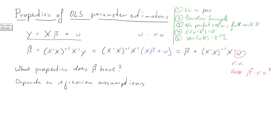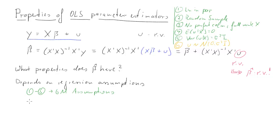The sixth assumption — I write it in a different color for reasons which will become obvious — is that the error terms u are actually normally distributed with zero mean and constant variance sigma squared times the identity matrix. Assumptions one through five are what we call the Gauss-Markov assumptions. If we additionally establish that assumption six holds — normality of the error terms — we call that the classic linear regression model assumptions, abbreviated CLRM.